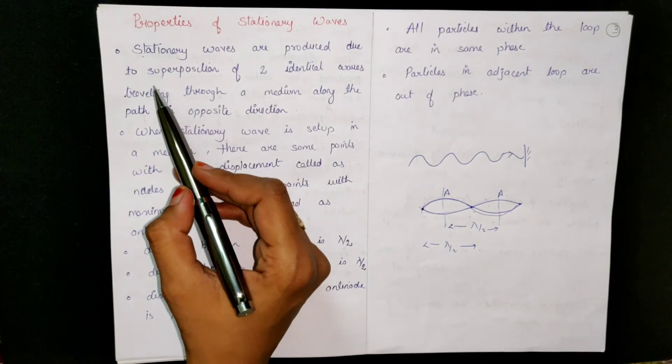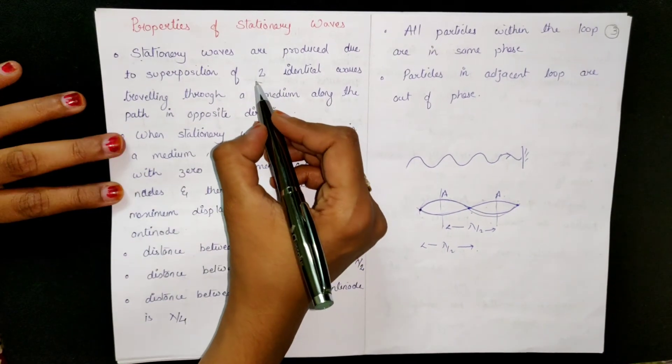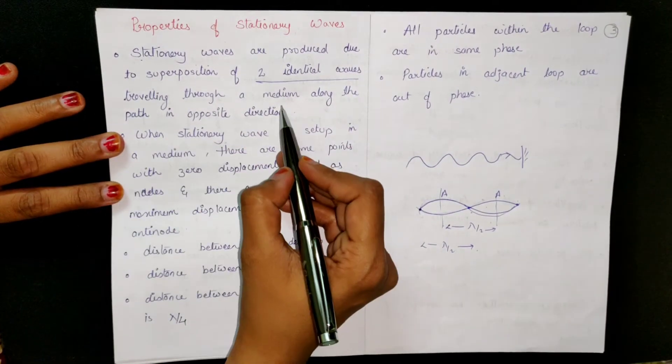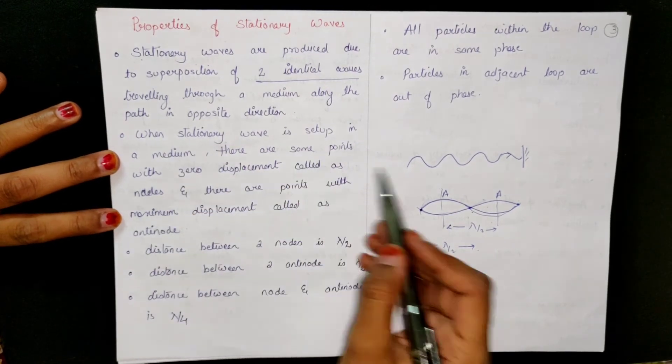Stationary waves are produced due to superposition of two identical waves traveling through a medium along the path in opposite direction.